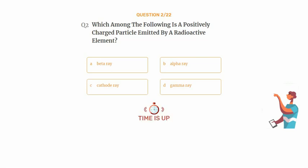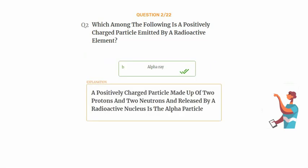The correct answer is Option B: Alpha. A positively charged particle made up of two protons and two neutrons and released by a radioactive nucleus is the alpha particle.